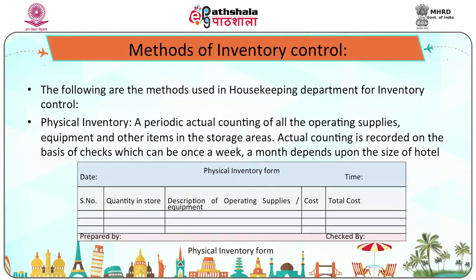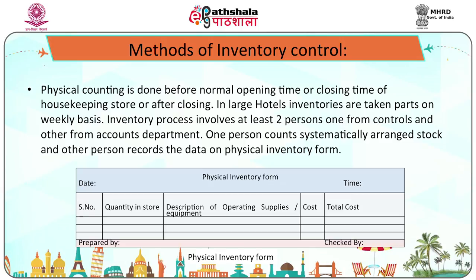Now we can discuss the methods of inventory control used in the housekeeping department. Number one is physical inventory. Physical inventory means a periodic actual counting of all operating supplies, equipment, and other items in the storage area. Actual counting is recorded based on checks, which can be once a week or a month depending on the size of the hotel. Physical counting is done before normal opening time or after closing time of the housekeeping store. In large hotels, inventory is taken on a weekly basis. The inventory process involves at least two persons — one from the controls department and one from the accounts department.